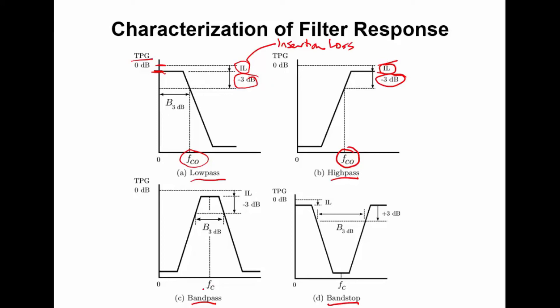For the bandpass filter, we define a center frequency and also a 3 dB bandwidth. The 3 dB bandwidth is defined by the points at which the response is 3 dB down from the maximum value. Once again, the maximum value is less than 0 dB by the amount we define as the insertion loss.